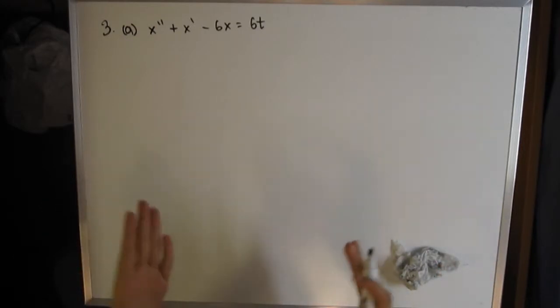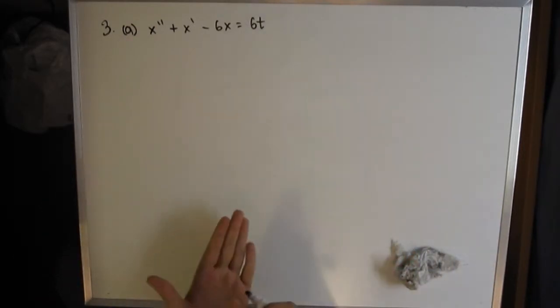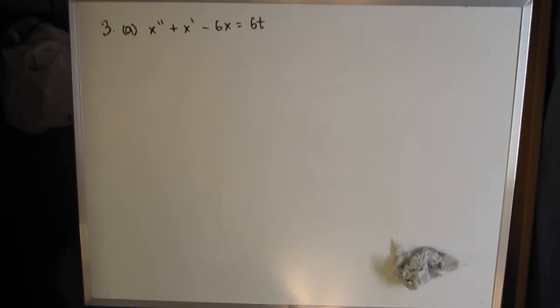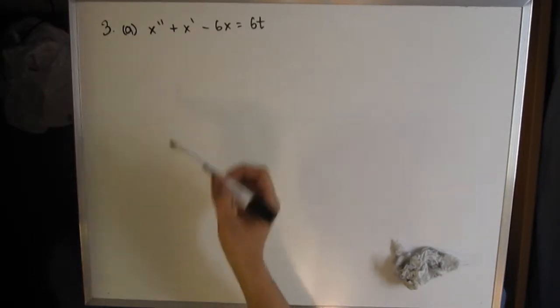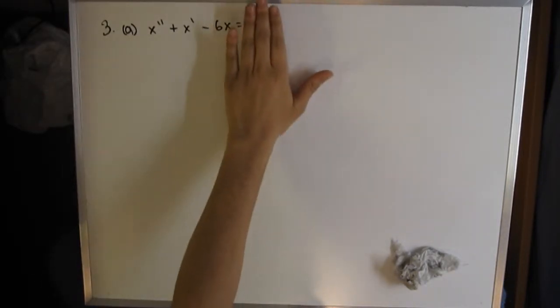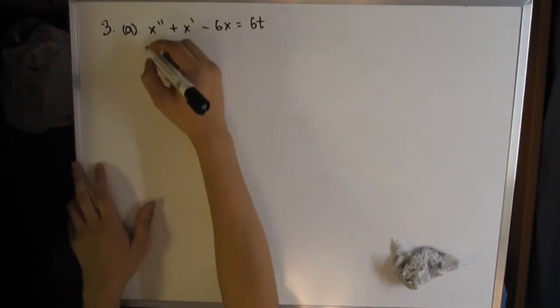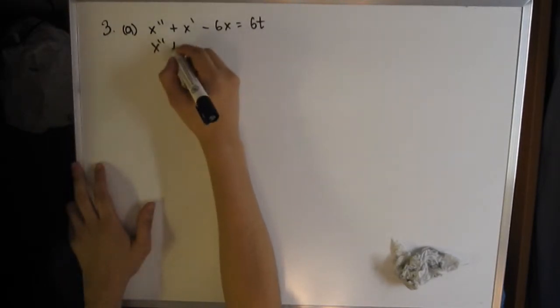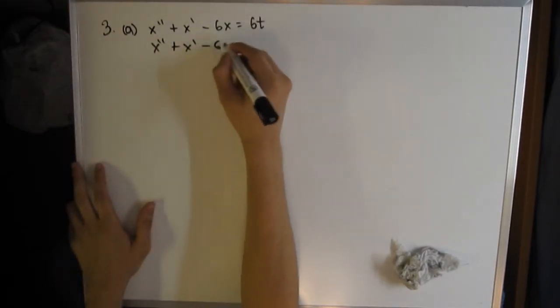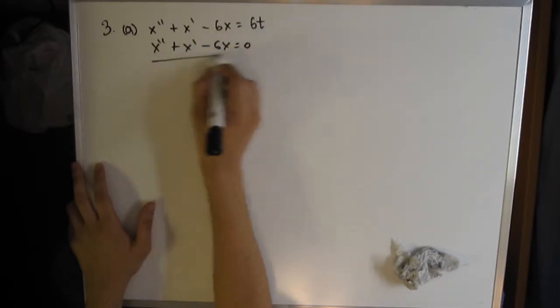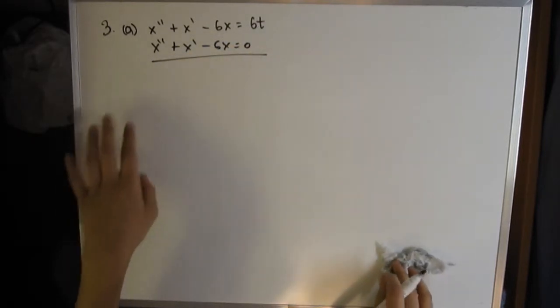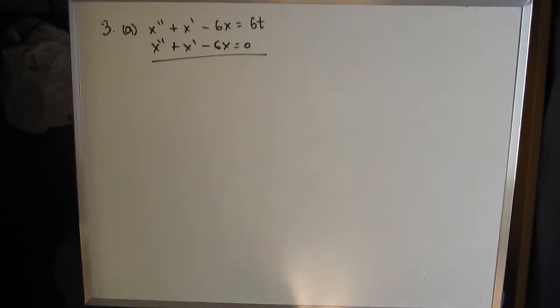We still have to apply the knowledge we learned from questions 1 and 2. We're going to start with that to keep it familiar. Assume this was 0, so you'd have x'' + x' - 6x = 0. Basically, you're going to solve for the homogeneous equation to get part of the answer for x.